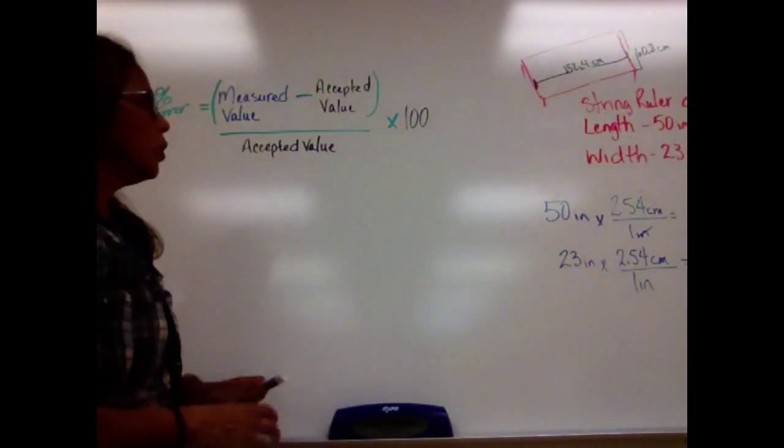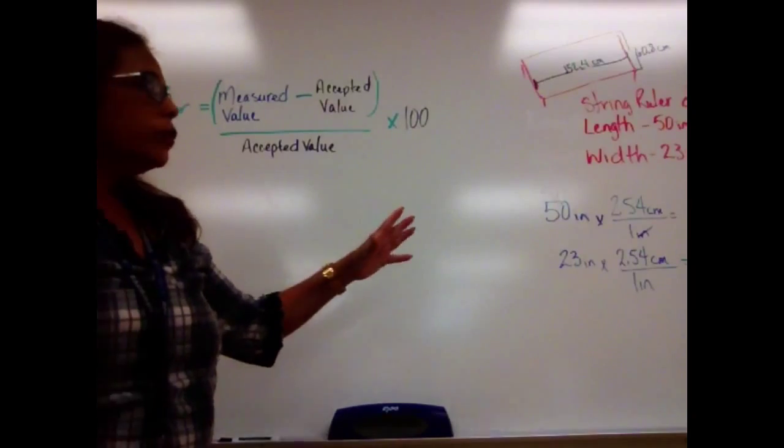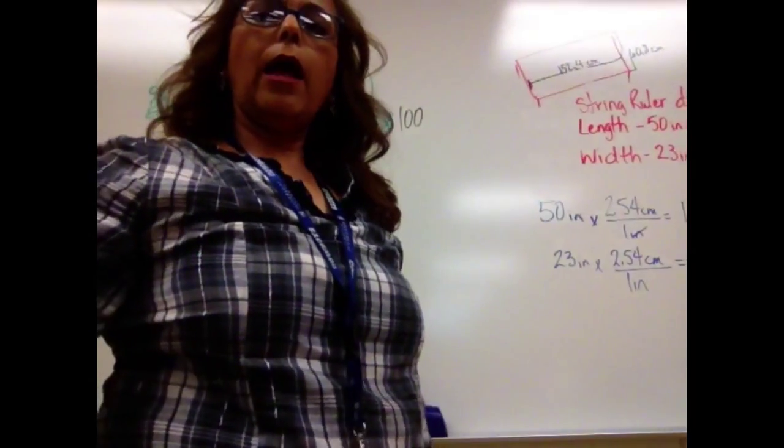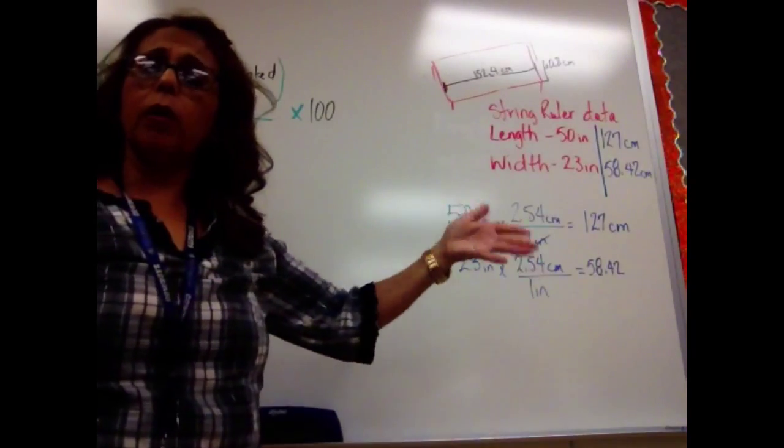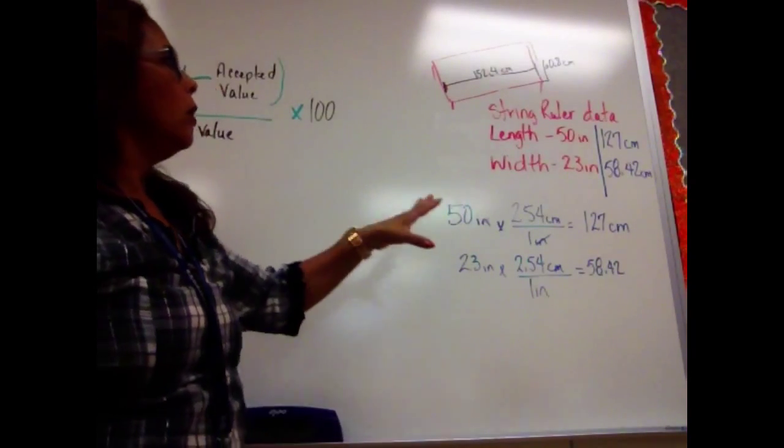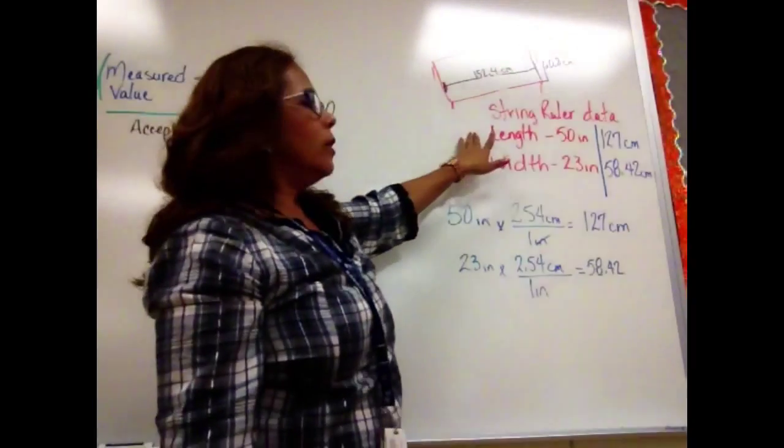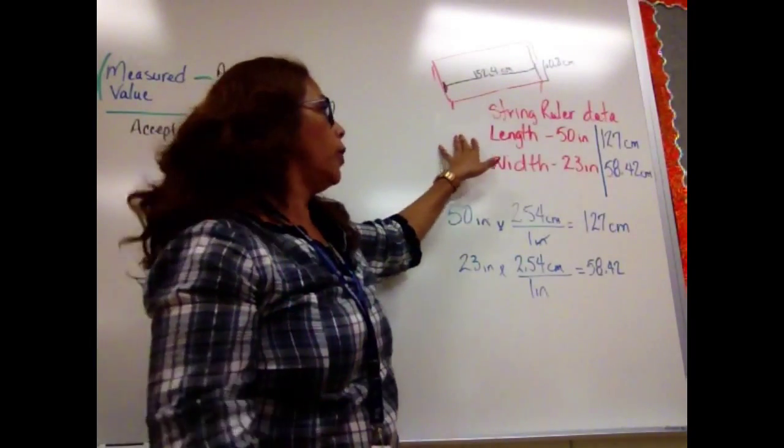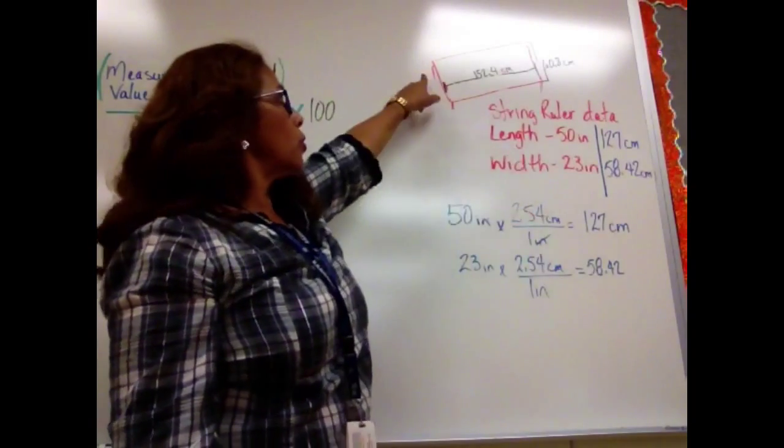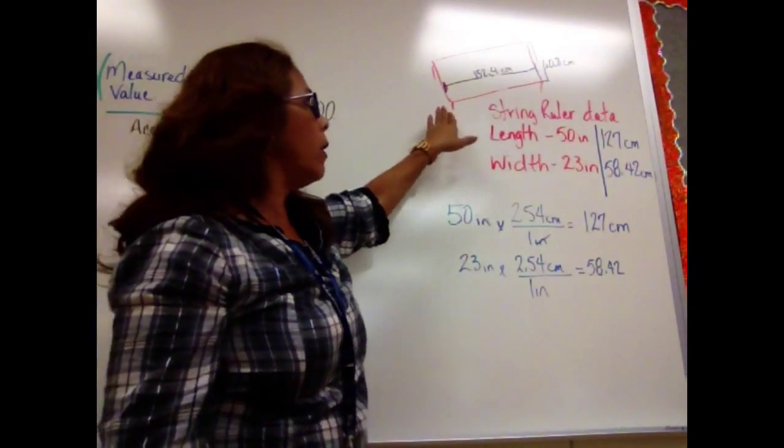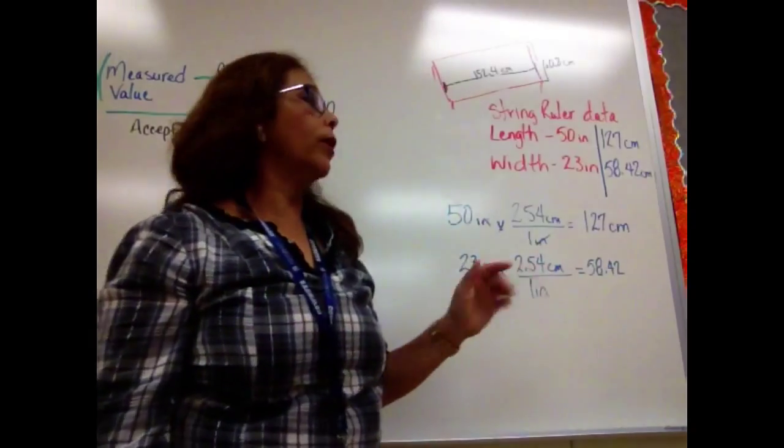So let's look at our data really quick. Over here, I have some data that I collected based on measuring of the table as we did with our string lab. So we have the length of the table, according to my string, was 50 inches, and the width of the table was 23. Length is this way, width in my case would be that way.